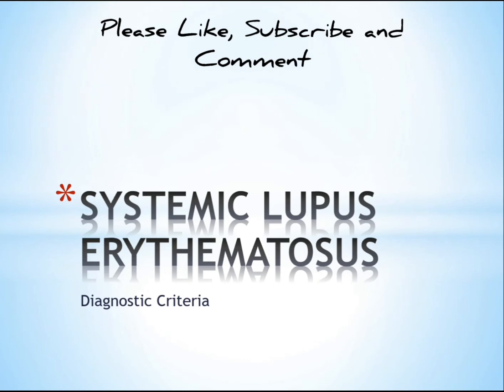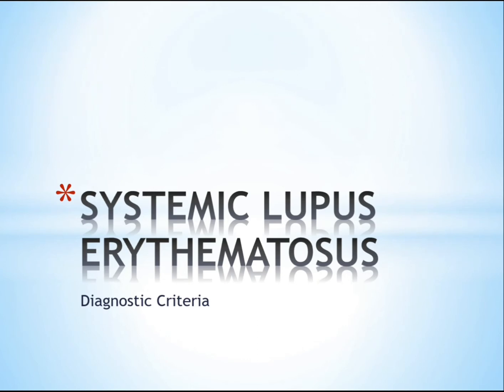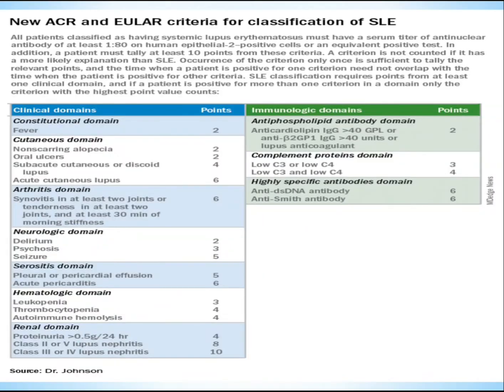Hello everyone. Today we'll be talking about the diagnostic criteria of systemic lupus erythematosus, an autoimmune condition commonly known as SLE. We're going to be looking at the new ACR and EULAR criteria for classification of SLE.